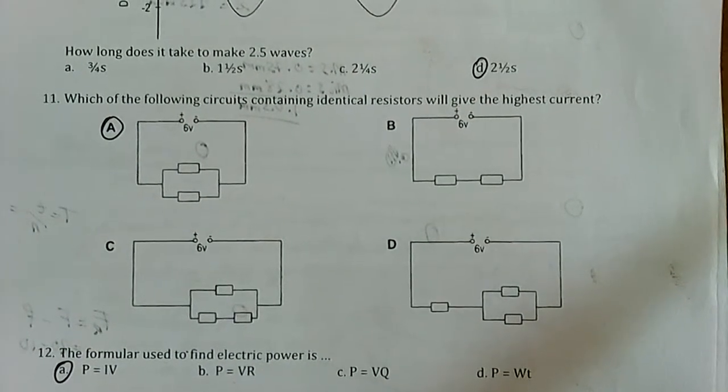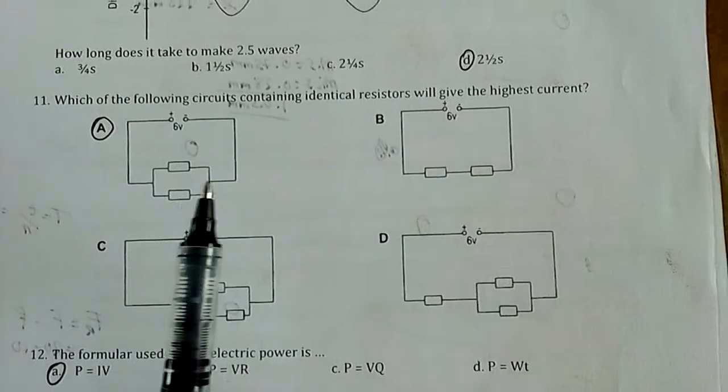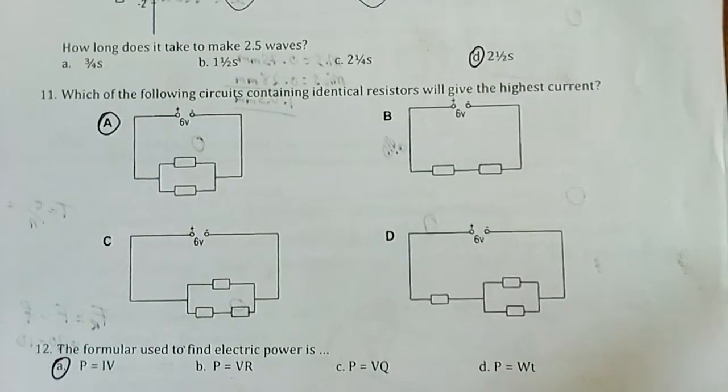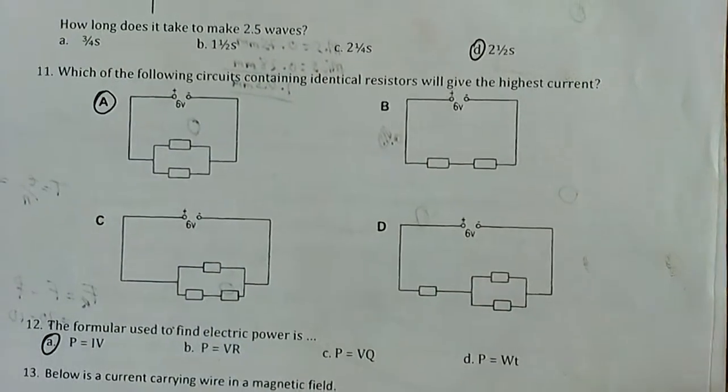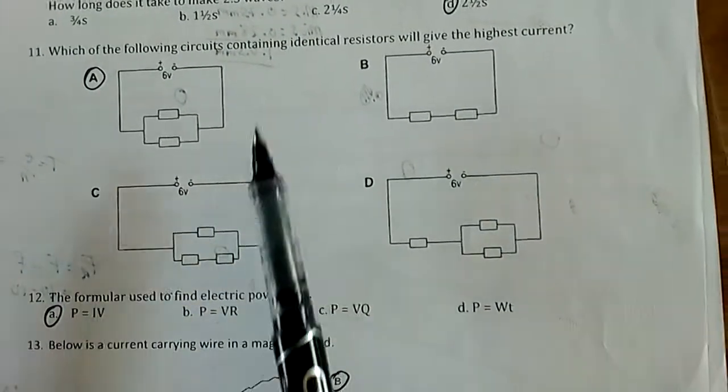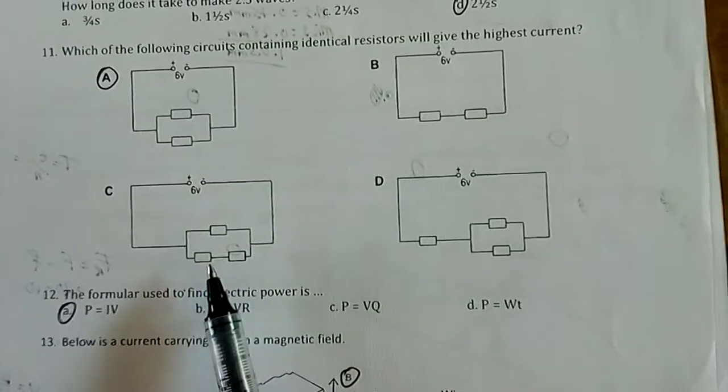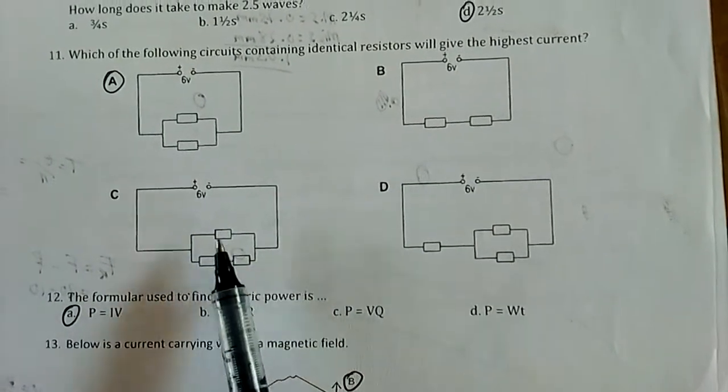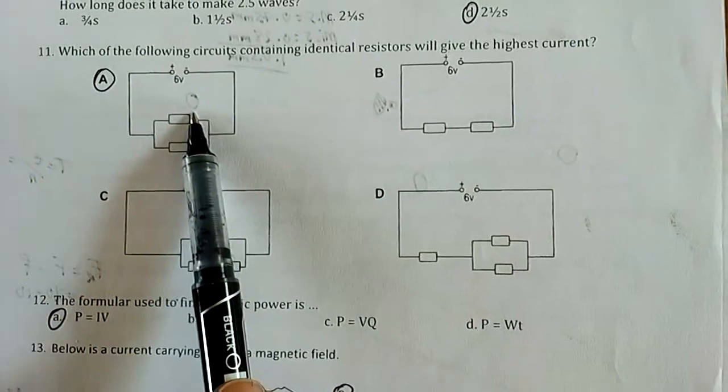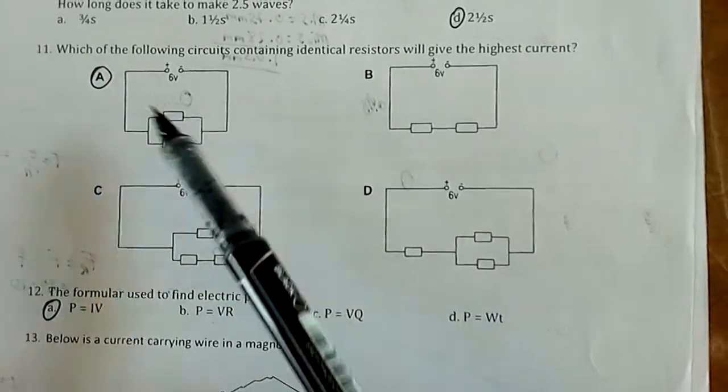Number 11: Which of the following circuits containing identical resistors will give the highest current? My answer is A. You can prove this by putting the same type of resistors. Current is higher where there's less resistance. If I put 2 ohm resistors everywhere, my lowest resistance value will be in A. You have to practice by putting the same resistor values and calculating the effective resistance. The answer should come out as A.